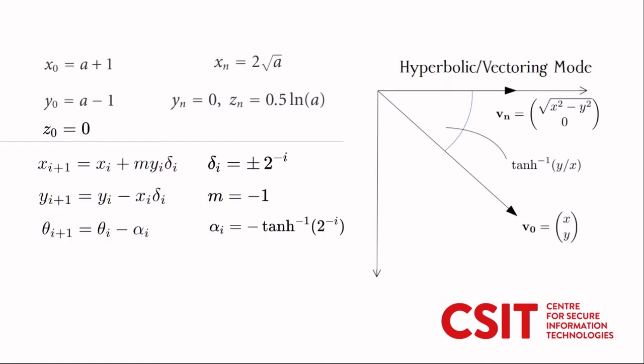Again the transformations but notice that now m equals minus 1 which is the correct parameter for hyperbolic geometry. And this means that the x and the y are now transformed in the same direction whereas in the circular rotation mode they were transformed in opposite directions. And again because the geometry is now hyperbolic the tan becomes hyperbolic tan. The radius preserving quantity k is the same as before.